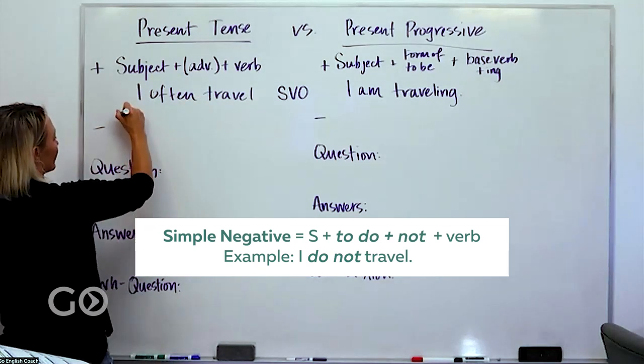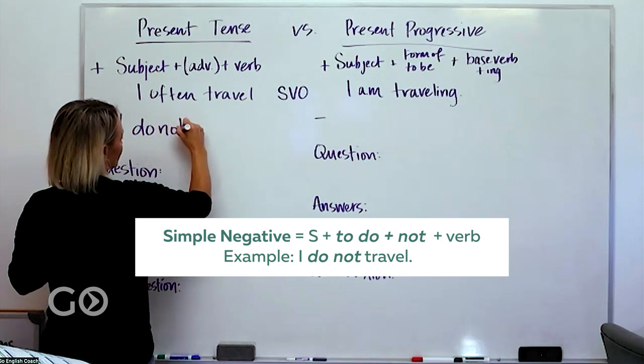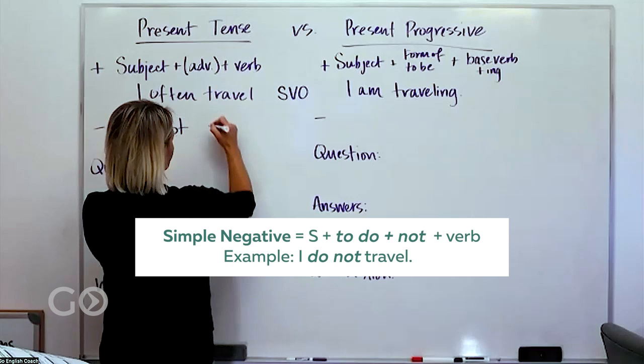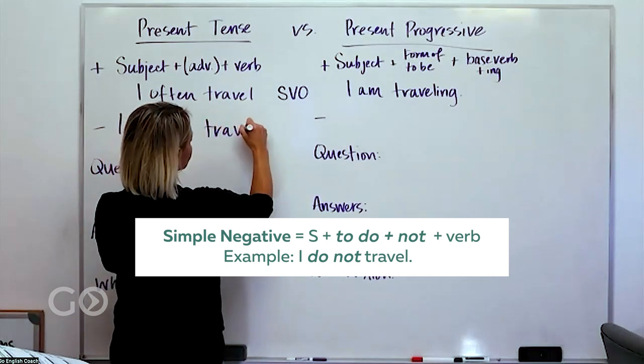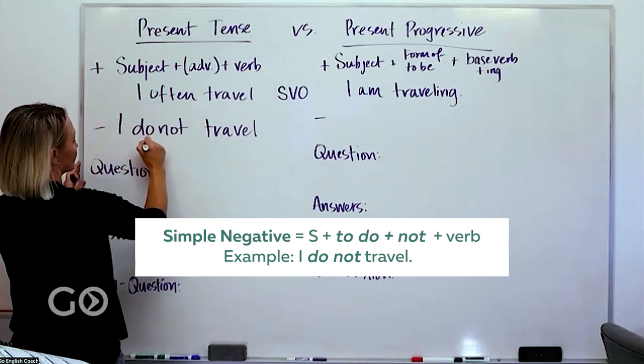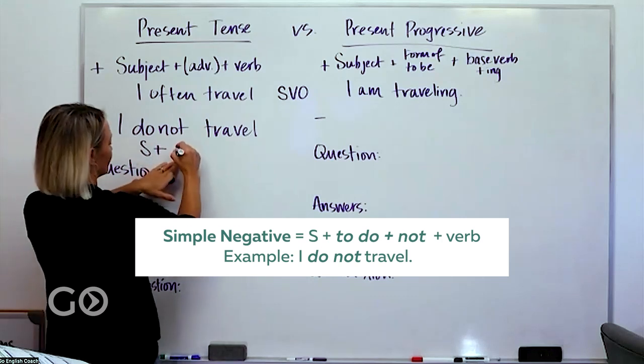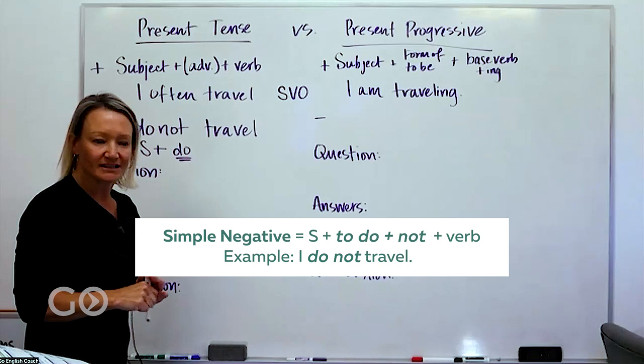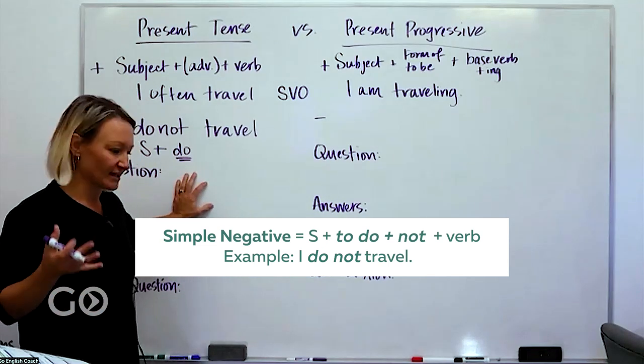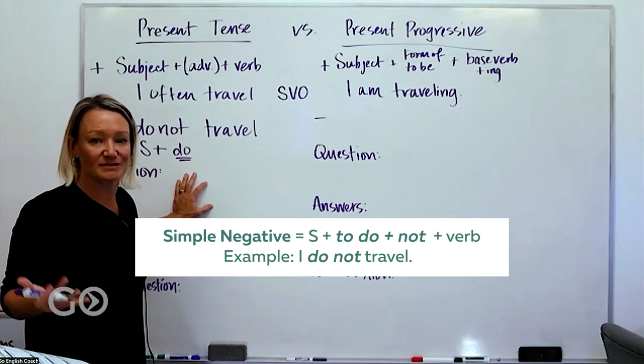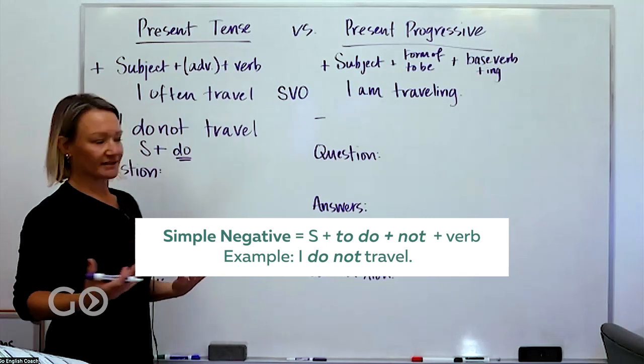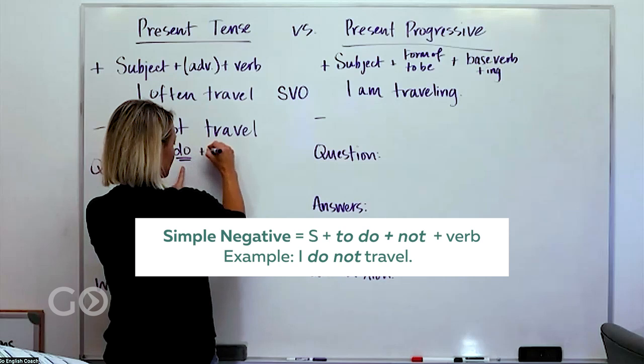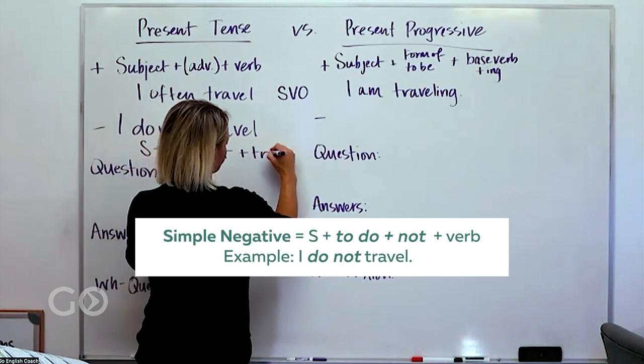So to make this sentence negative we'll just use the same words here. We would say I do not travel. So then our formula changes from the subject plus we have the do part. This part is difficult for many learners of English, and of course because it doesn't exist in Spanish it's something we have to practice. So I do and then the negative piece and then travel.